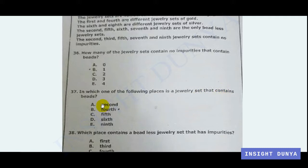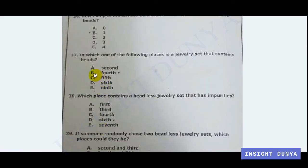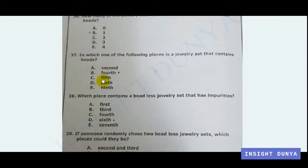Question 37: Which one of the following positions is a jewelry set that contains beads? We have to find the position where there is a bead jewelry set. Option A is the second position — second position is beadless, so it is not the answer. Option B is the fourth position — the fourth set has beads, so this could be our answer.